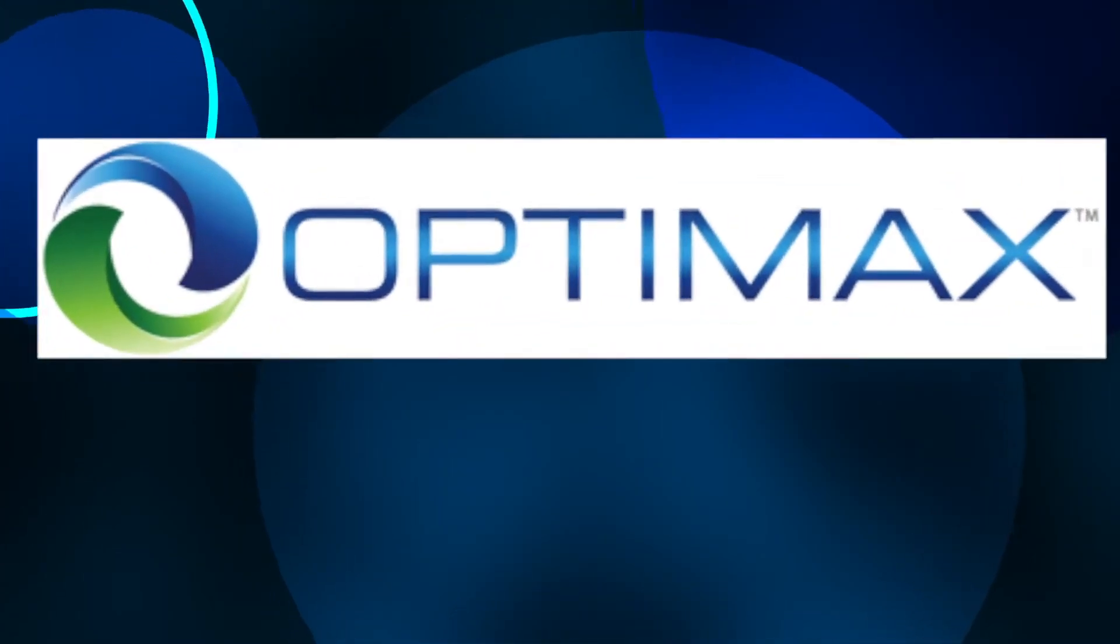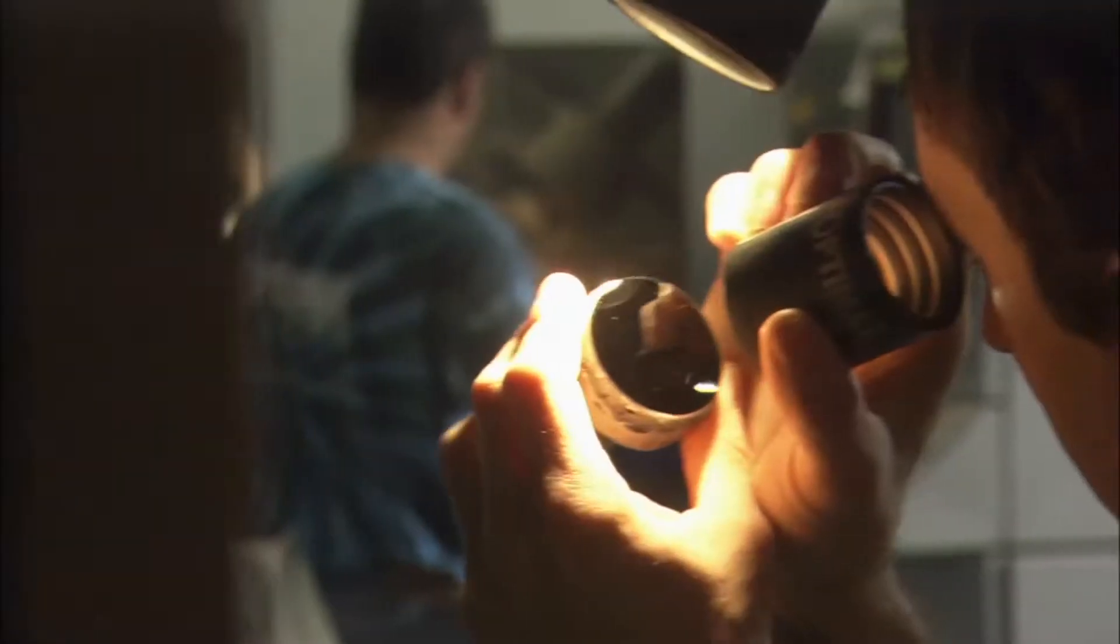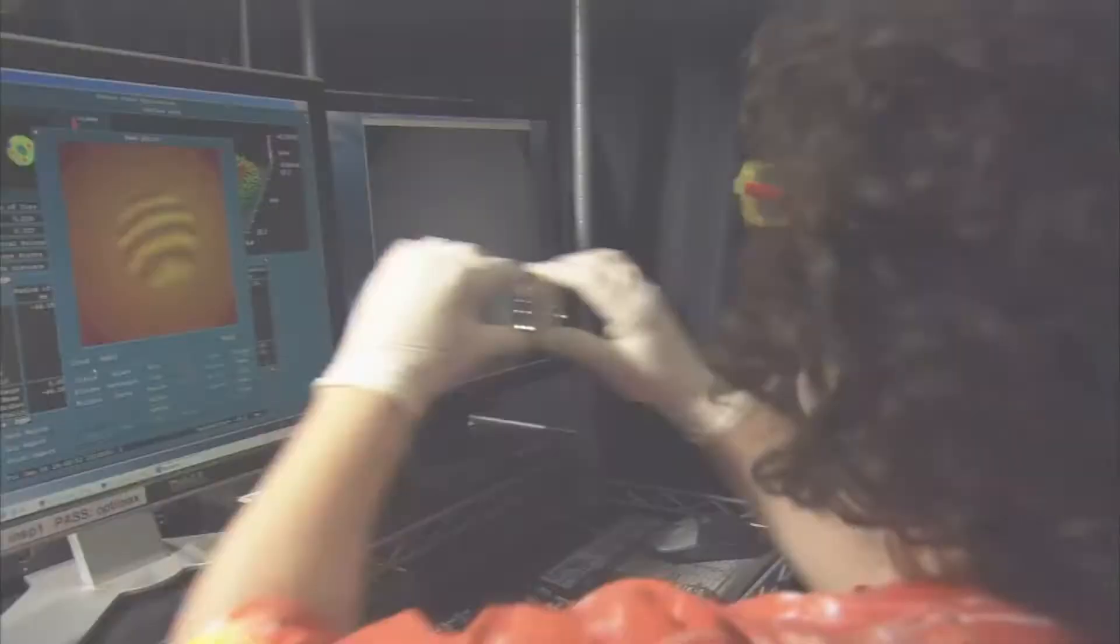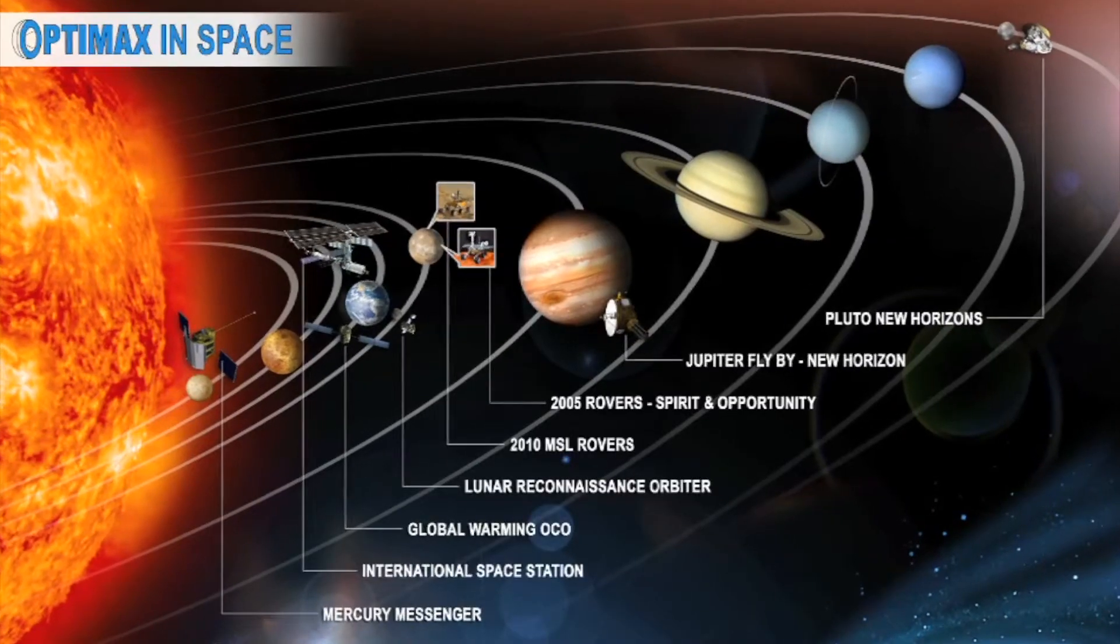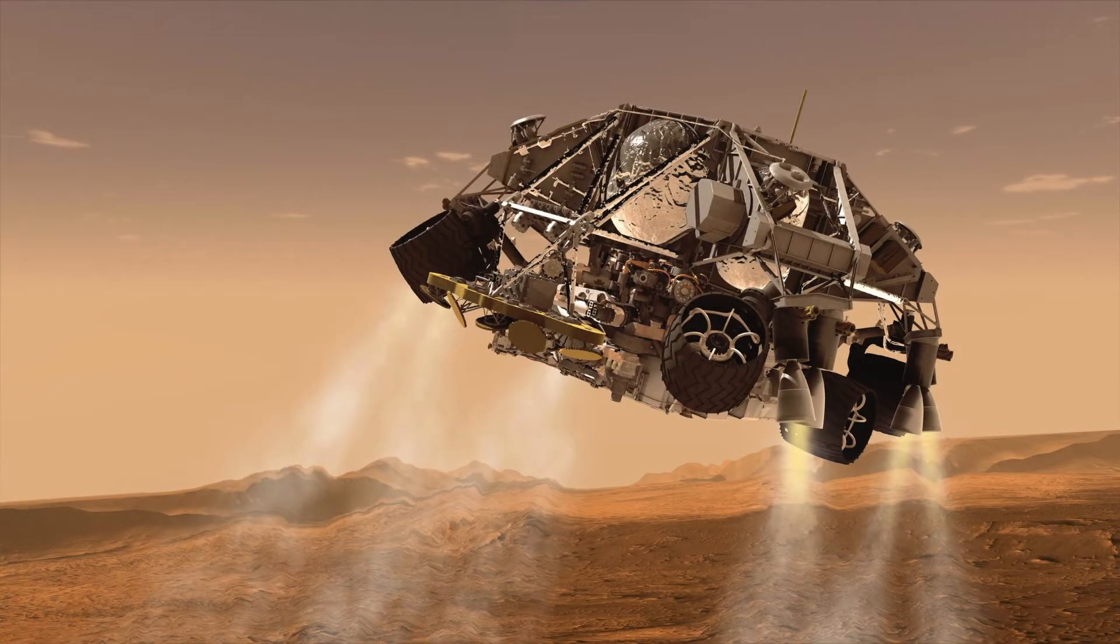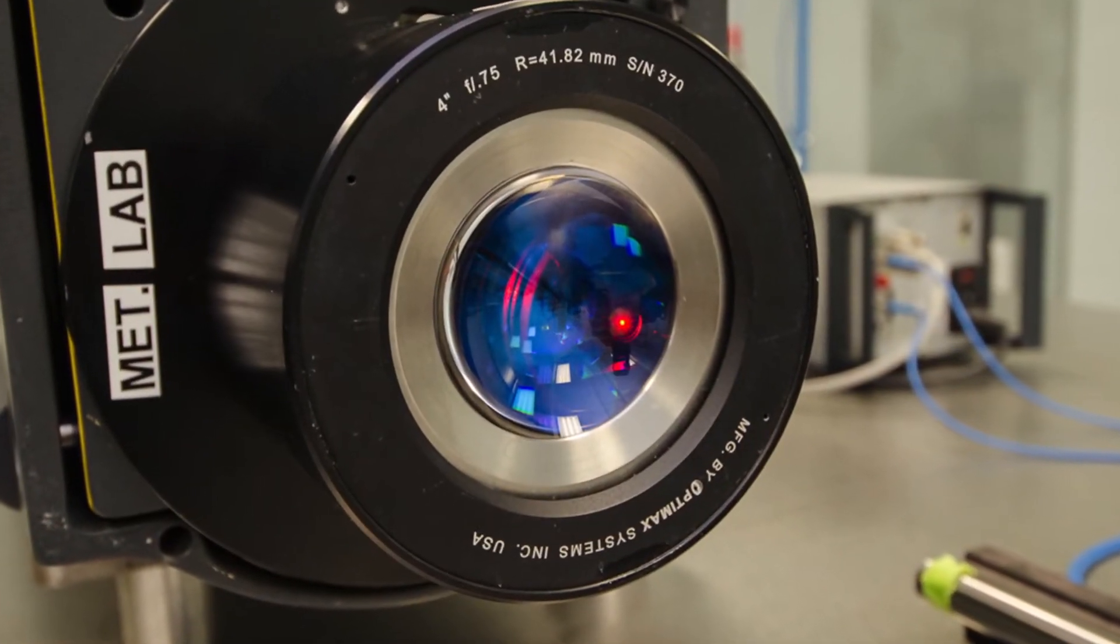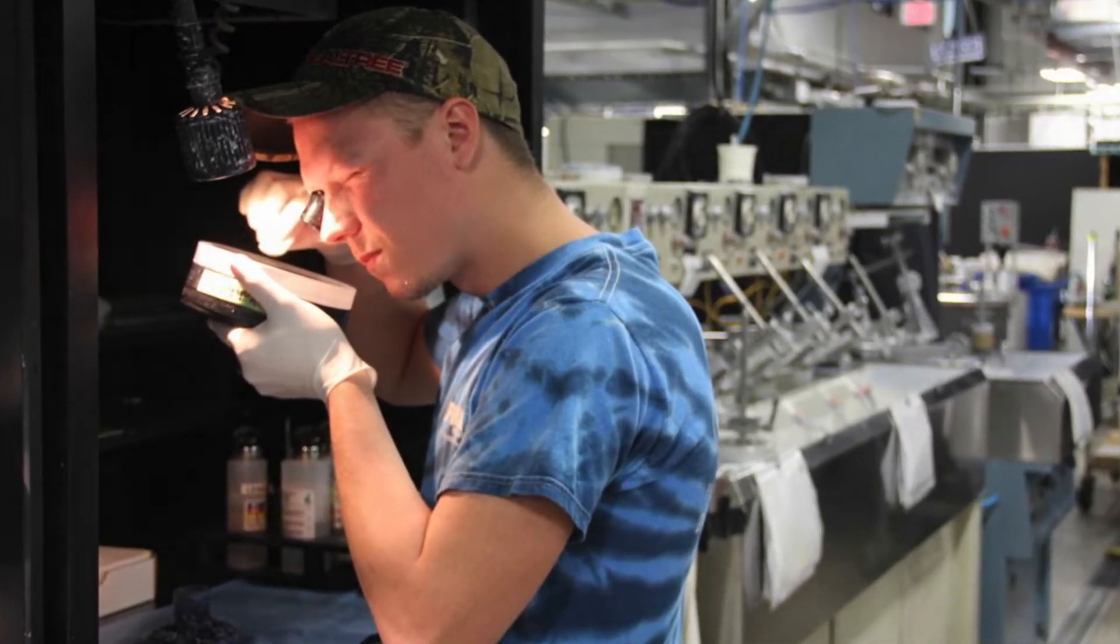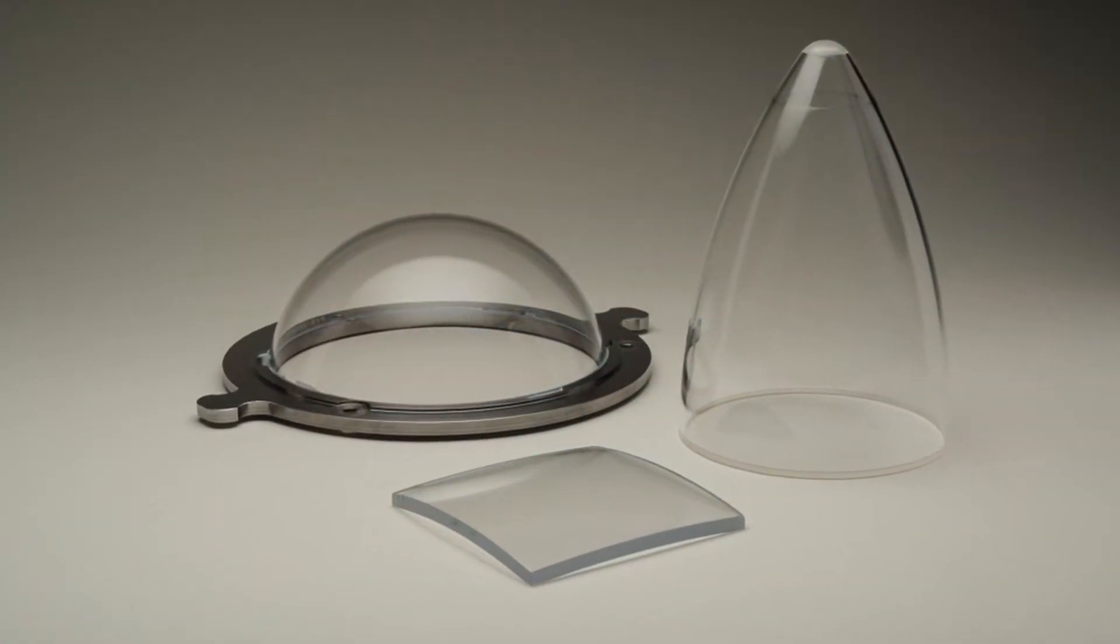We primarily focus on prototype optics here. OptiMax has optical elements all over the place. There's a lot of them up in space. We were on all the Mars rover missions so far. There's optics in the Mercury Messenger. We're also involved in medical sciences, from everything from contacts to corrective eye surgery. There's OptiMax elements everywhere.